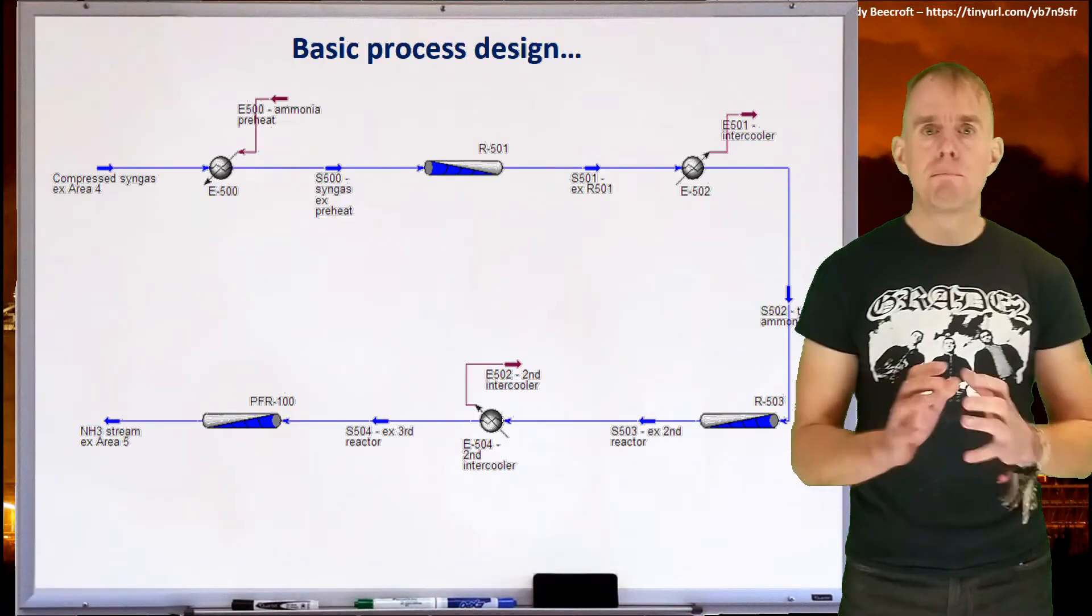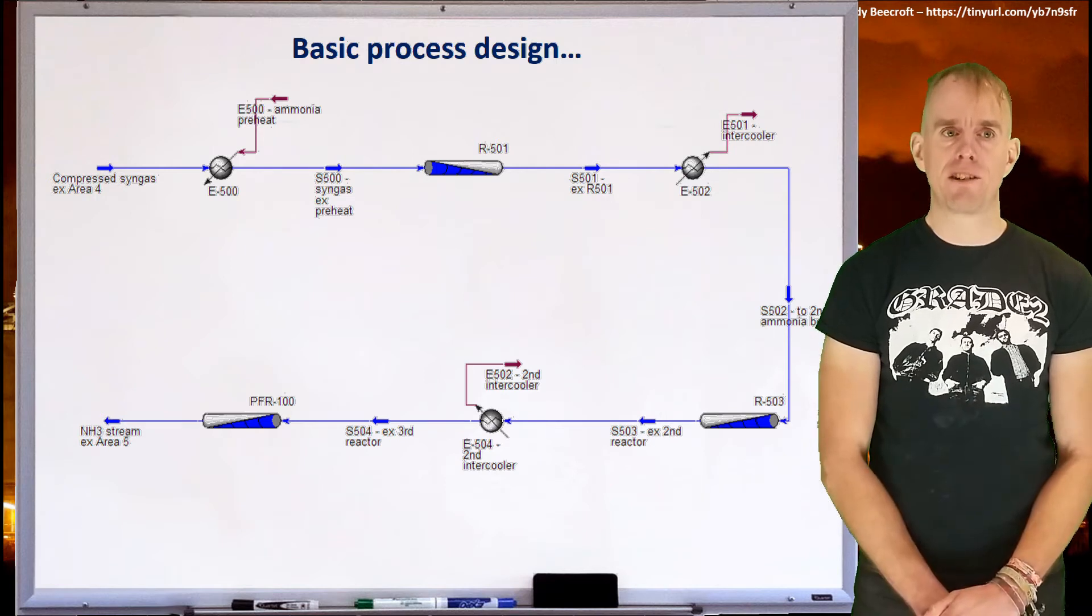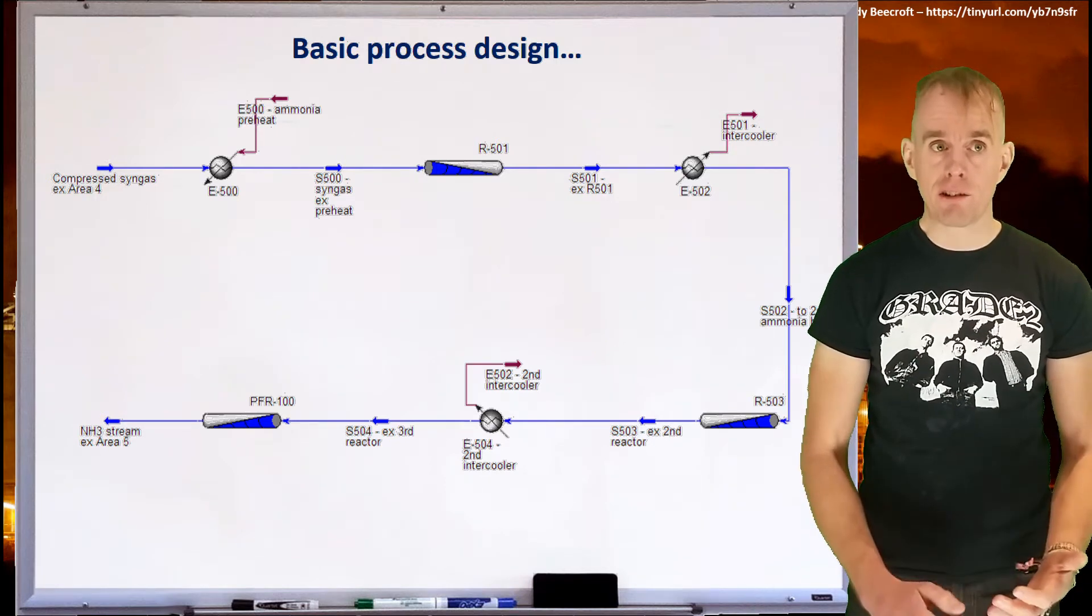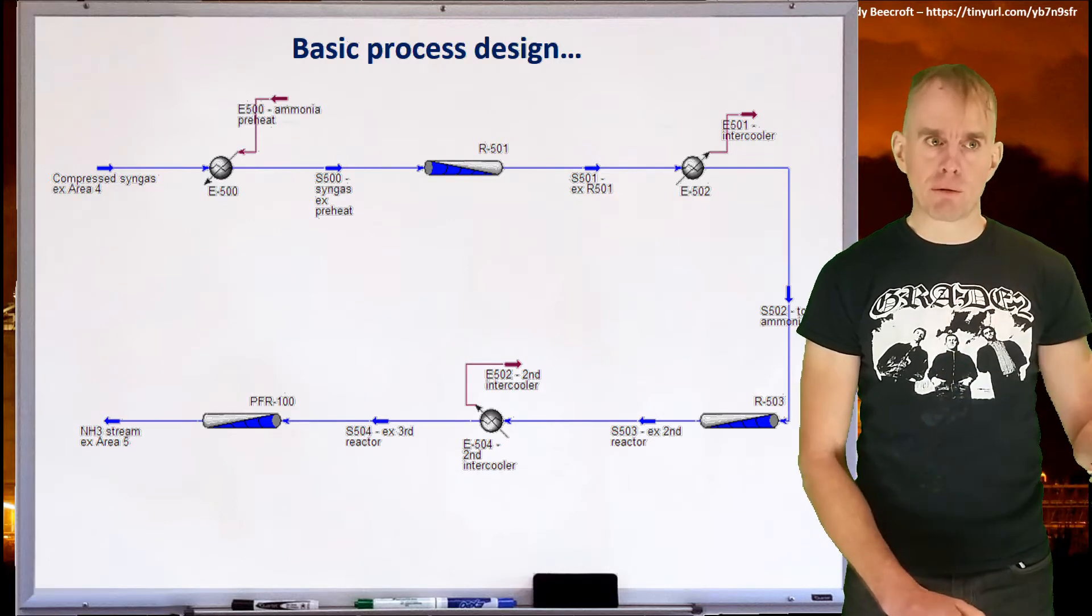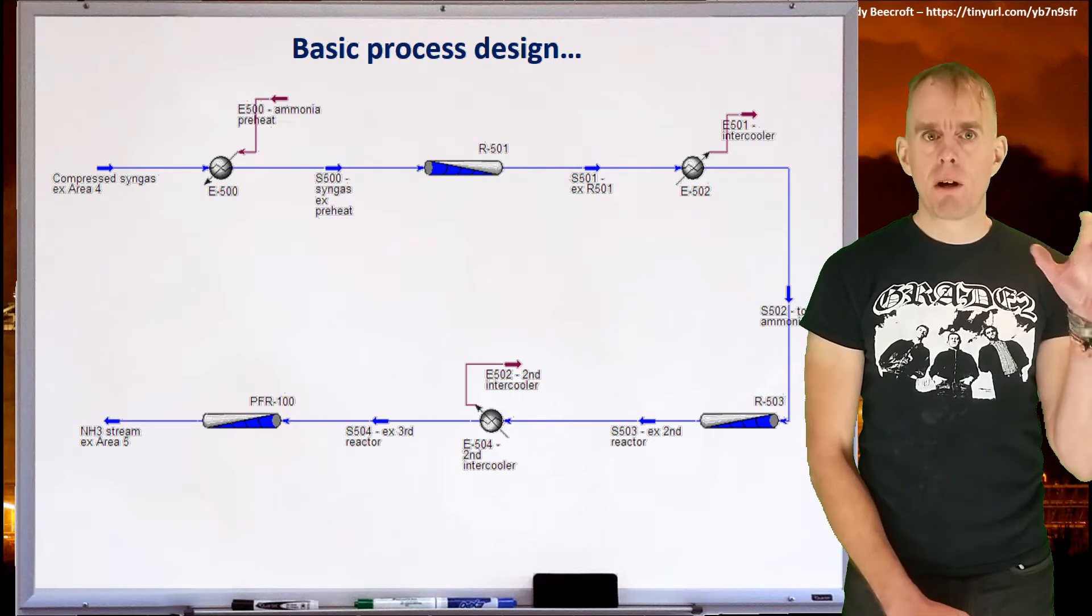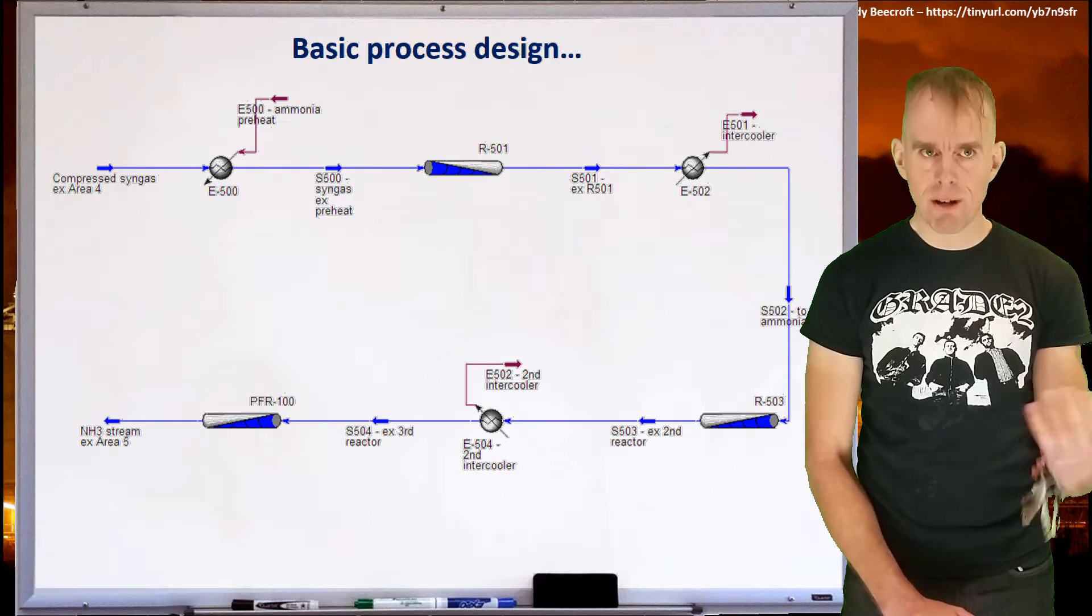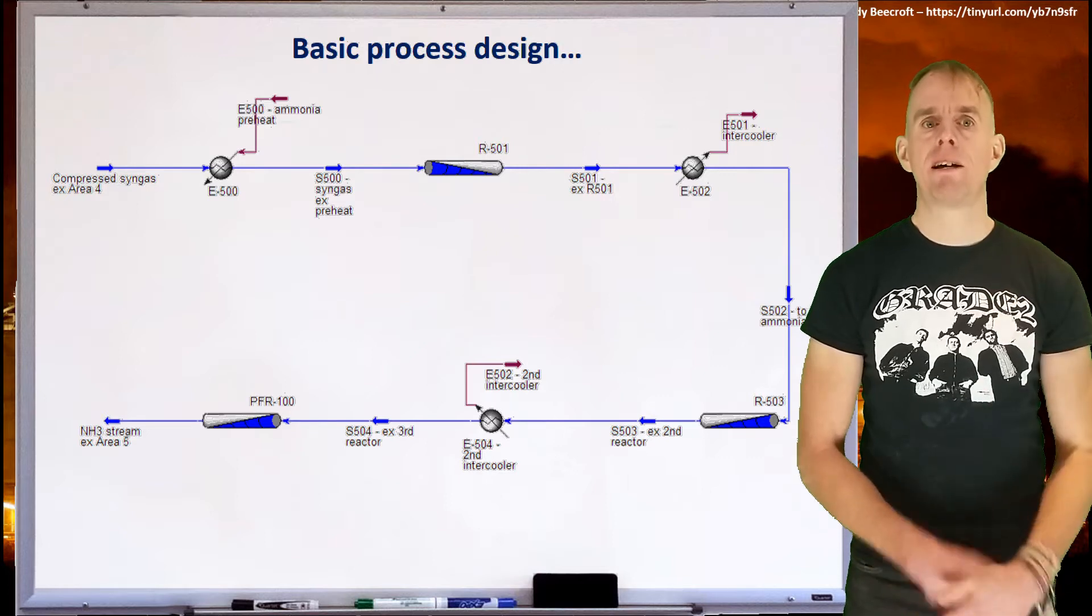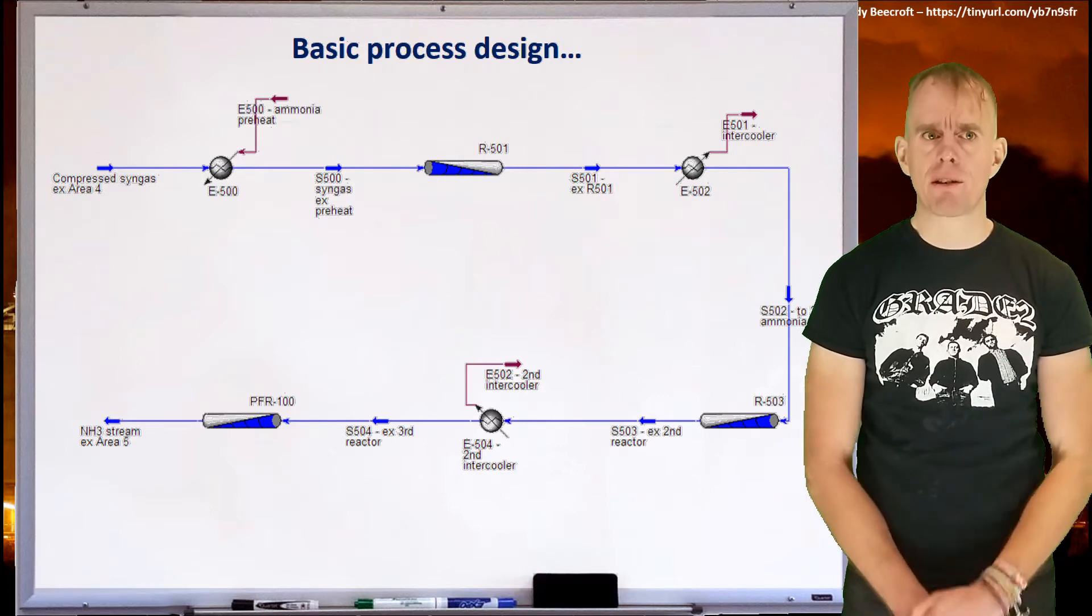Let's start by looking at the basic process design for an ammonia synthesis reactor. So here on my whiteboard is a screenshot from a Unisim flow sheet. Let's start at the top left and walk the process route. We've got compressed hydrogen and nitrogen coming in. We've got a heat exchanger which preheats that hydrogen and nitrogen to reactor conditions. We've got our first packed bed, R501, where our synthesis takes place and the reaction is exothermic.